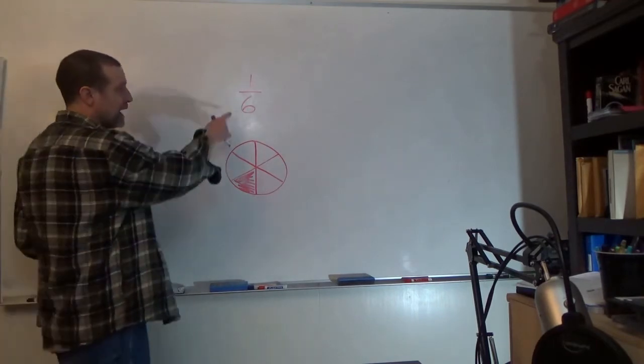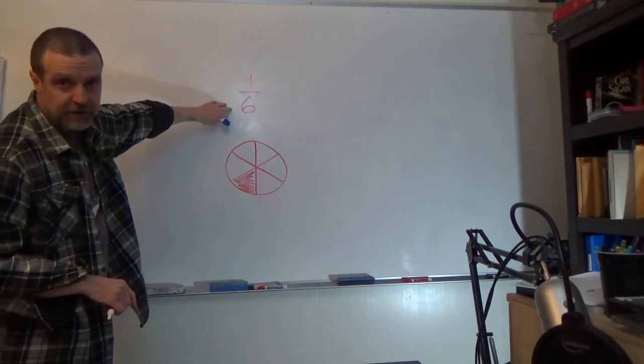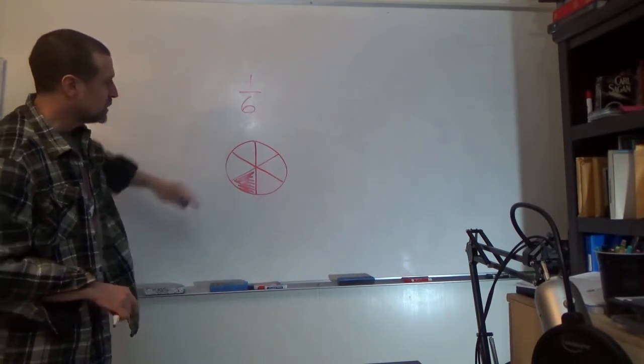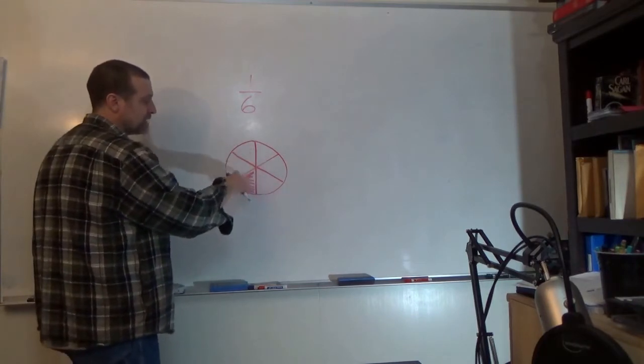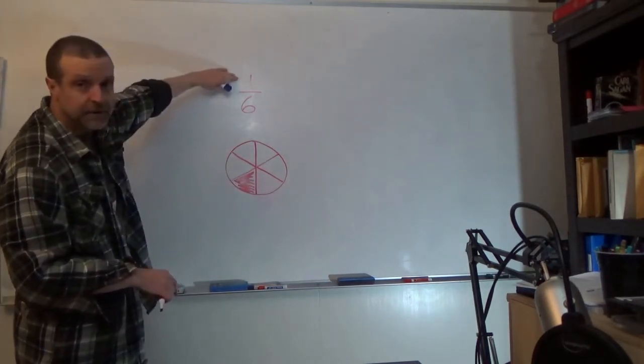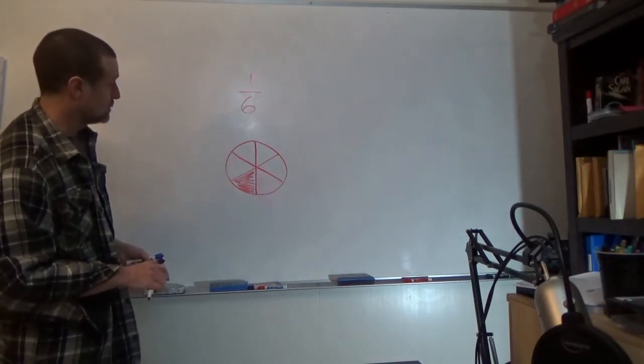Now, the bottom of my fraction, that's called the denominator. The denominator is the number of pieces that you cut your object into, and the top, the numerator, is the number of pieces that you're talking about.